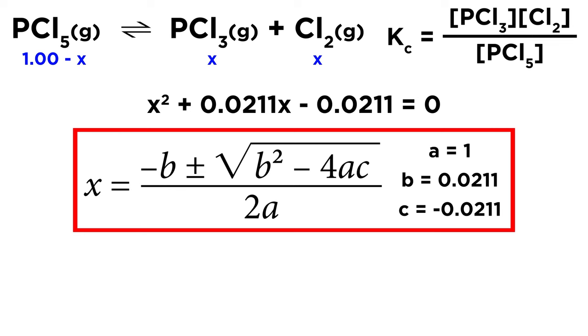A, B, and C are just the coefficients from our equation. So A equals 1 because X squared is just 1X squared. B is 0.0211 because that is the coefficient on the X term. And C is negative 0.0211 as that is the constant. So when we plug that in and do all the simplification, we get X as being equal to 0.135 and negative 0.156. Remember that a quadratic equation will always have two solutions.